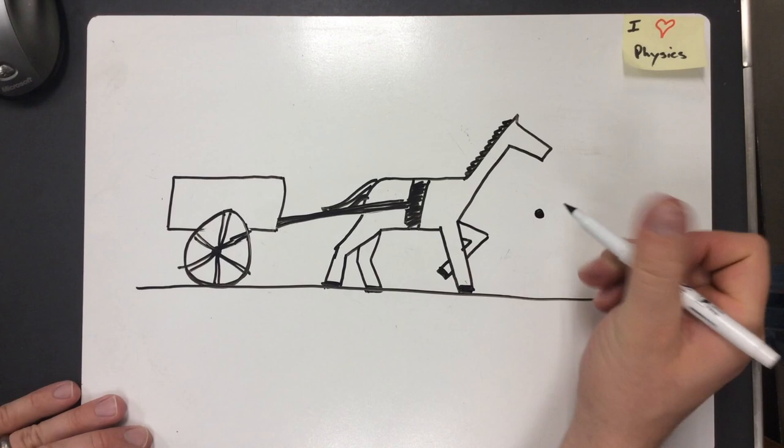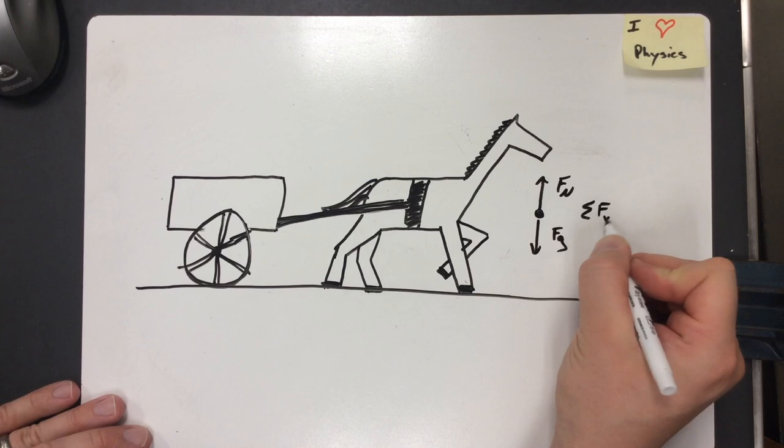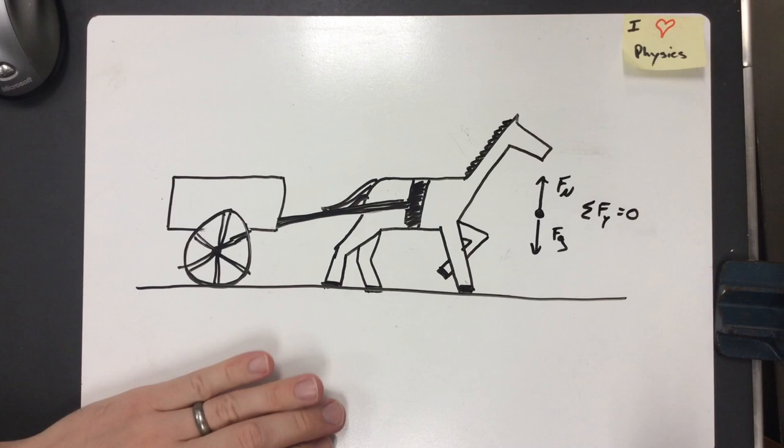First off, what we're not concerned about here is the forces in the vertical direction, because we know at this point that the force of gravity acting on an object is going to cancel out with the normal force acting on the same object, creating a net force in the y direction equal to zero. So that's not what this problem is going to be about.